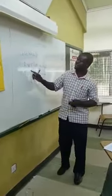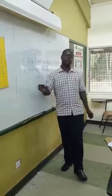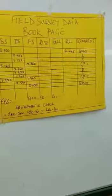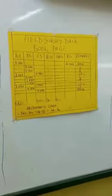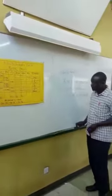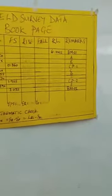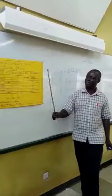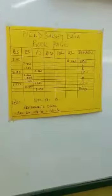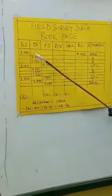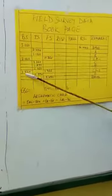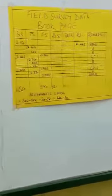Today let's look at the Rise and Fall method. I have a chart in the form of a book page — a data sheet — and as you can see, it has a column of back sights, a column of inner sights, a column to raise, reduced level, and remarks. The back sight is the first reading taken when the instrument has just been set.